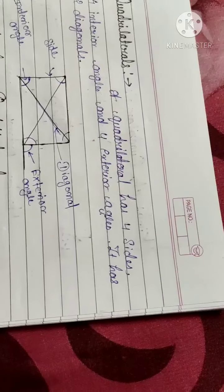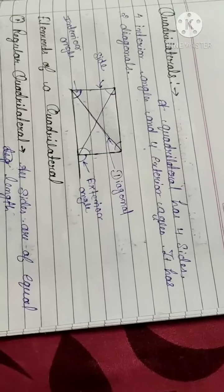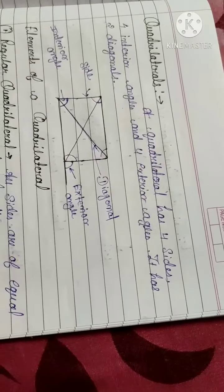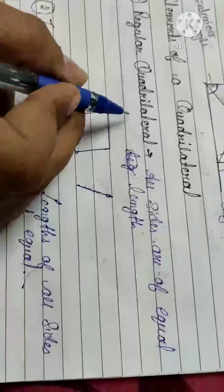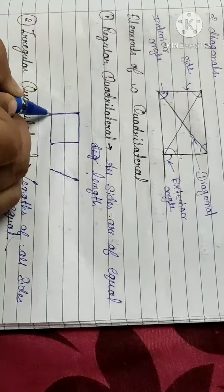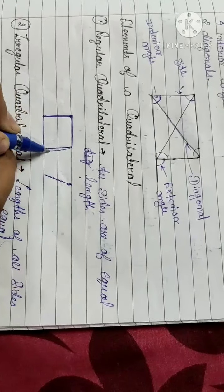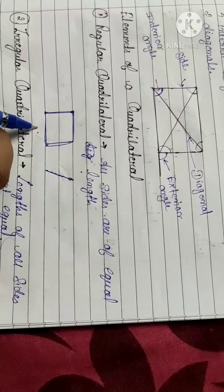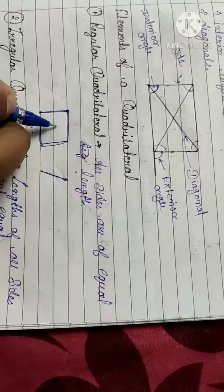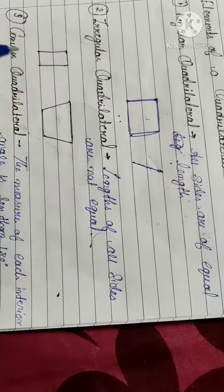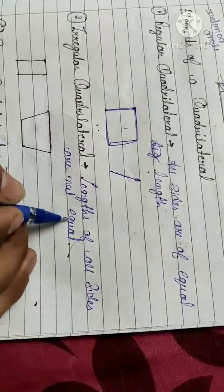Elements of a quadrilateral: a regular quadrilateral is one where all sides are of equal length. An irregular quadrilateral is one where the lengths of all sides are not equal.